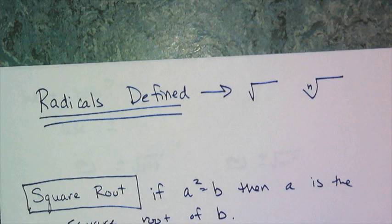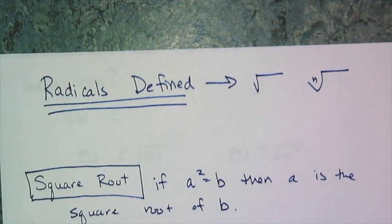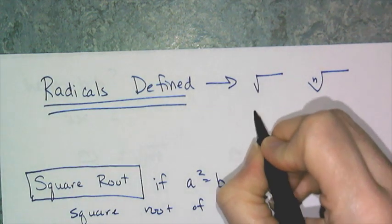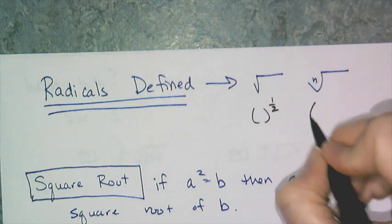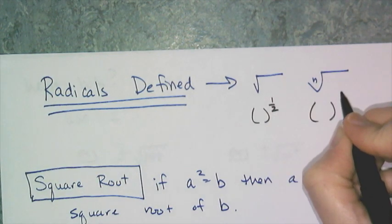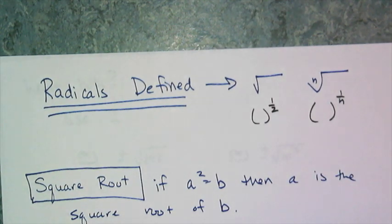Now what these radicals really are, they're really exponents, and they're really fractional exponents. So a square root is the same thing as raising something to the 1 half power, and the nth root is the same thing as raising something to the 1 over n power. And in Algebra 1, we pretty much exclusively deal with the square root because the highest exponent we deal with in functions is usually the quadratic, and to undo quadratics you need to square root things.